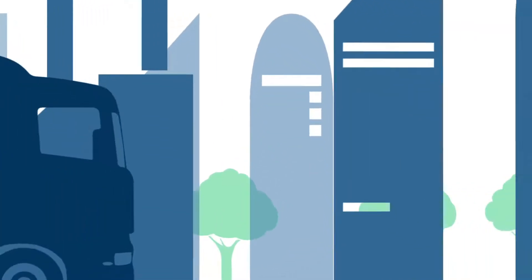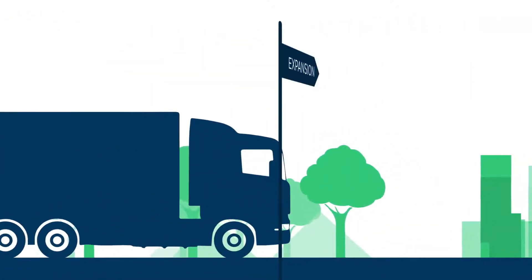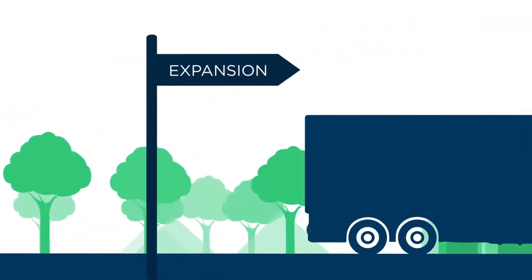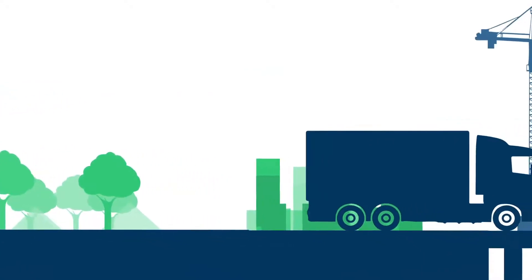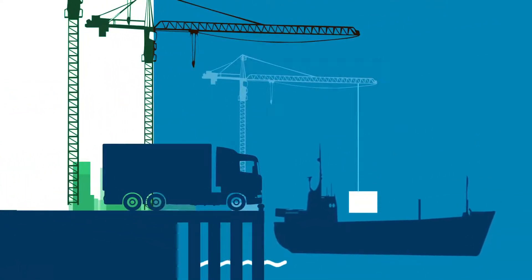For example, a supplier of assembly line technology ships a significant order to a new client in an expanding market. An important sale in times of economic uncertainty. The goods are shipped and delivered to their destination.